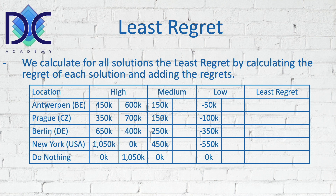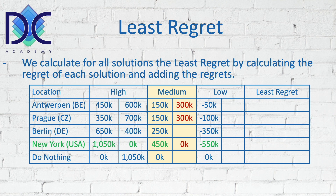Next, we do the same for medium sales volumes. New York again has the highest at 450k, so its regret is zero. Antwerp: 450 − 150 = 300k regret. Prague is the same: 300k regret. Berlin: 200k regret. Do nothing: 450k regret.